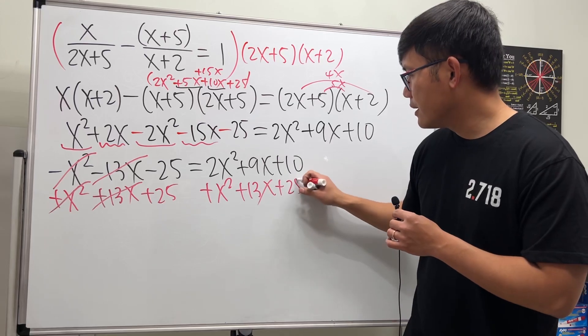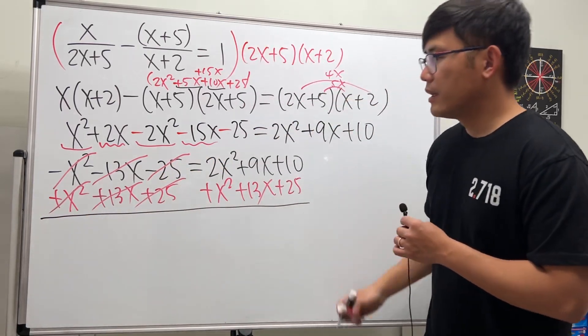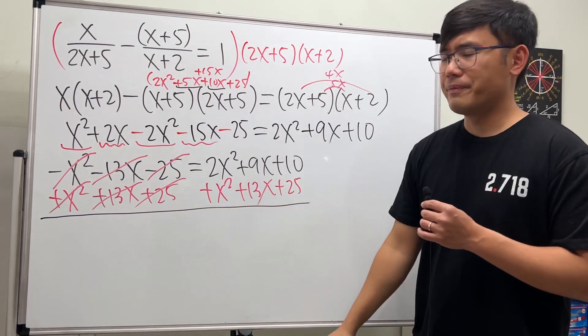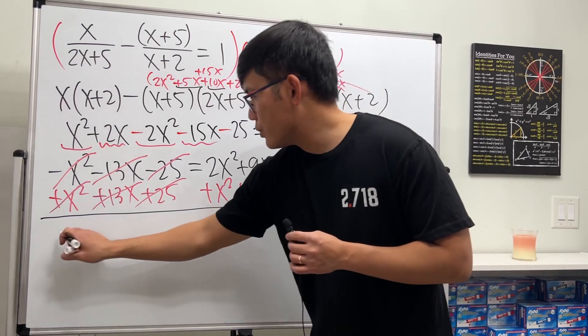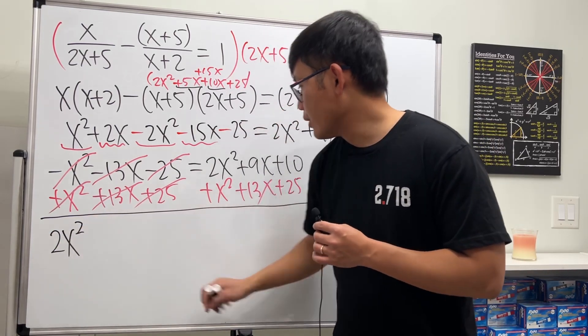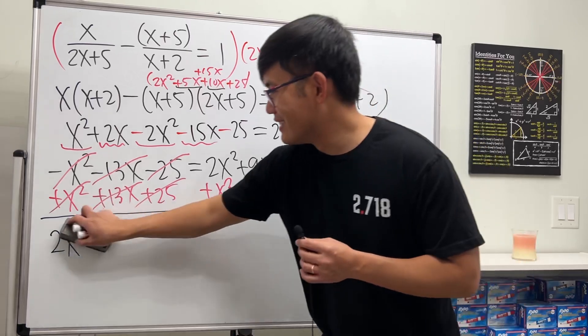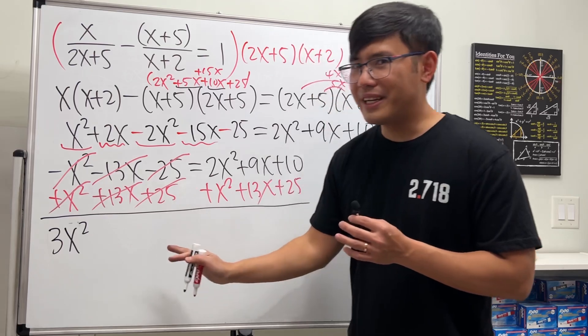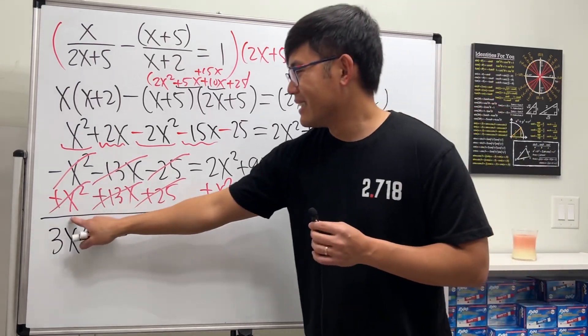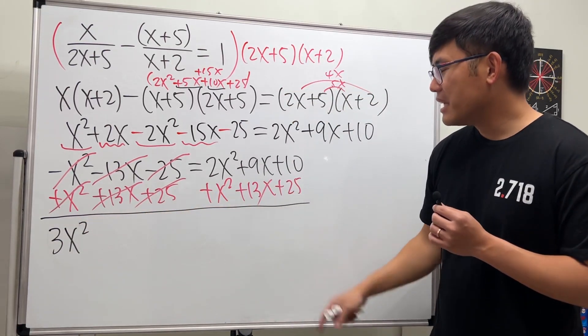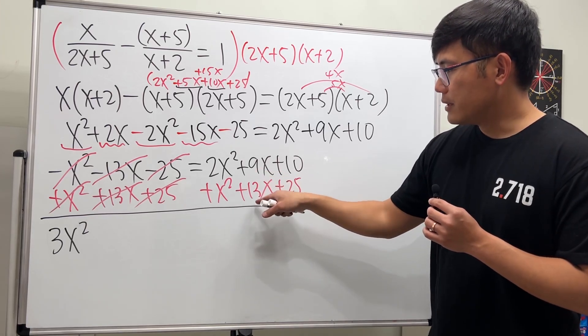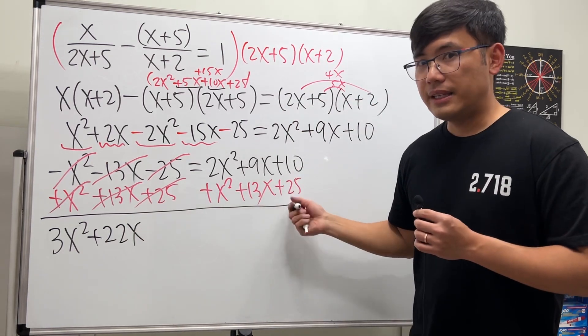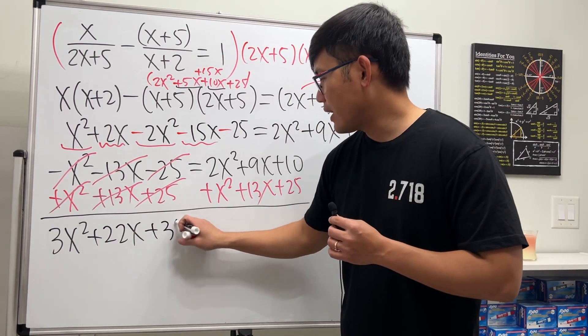So this and that cancel, so we have this equal to zero. But let me write down the result right here first—over there I have more space that way. So this right here, this and that is 2x squared—no, 3, 2 plus 1 is 3x squared. Yeah, so be really careful and be patient and then just relax when you're doing this kind of question. Next, 9 plus 13 is 22, so plus 22x, and then this and that is plus 35.